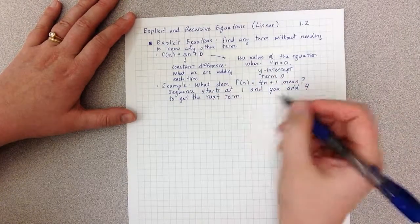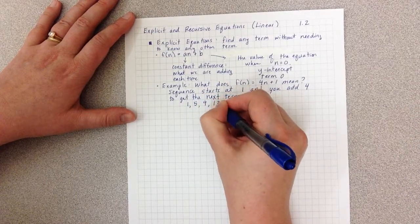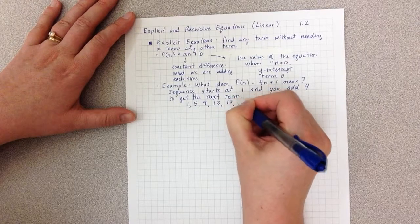So if I want to write that out, I would write 1, 5, 9, 13, 17, etc.